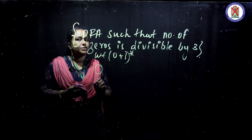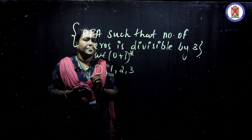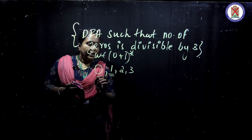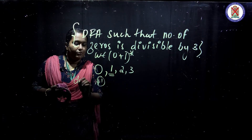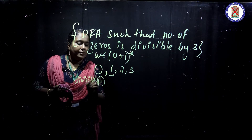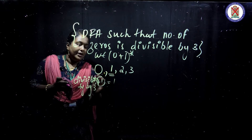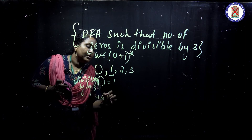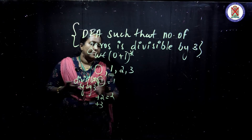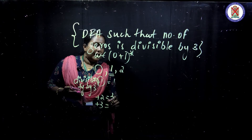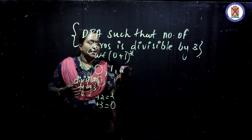When checking divisibility by 3, the possible remainders are 0, 1, and 2. If a number is perfectly divisible by 3, remainder is 0. A multiple of 3 plus 1 leaves remainder 1, and a multiple of 3 plus 2 leaves remainder 2. So there are only 3 possible remainders: 0, 1, and 2.